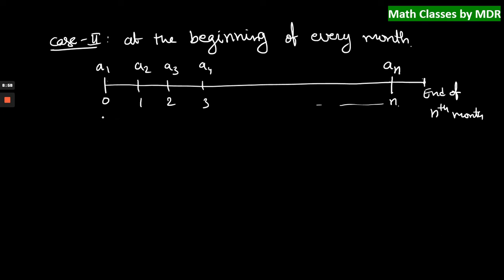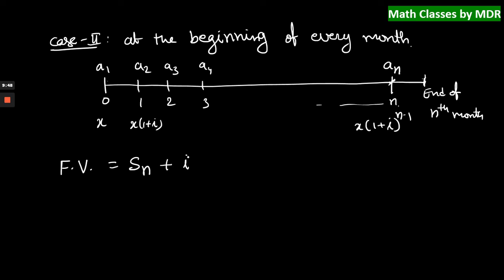The sum of this geometric series is the same as what we calculated in Case 1, which is Sn. However, An is the amount deposited at the beginning of the nth month. When we come to the end of the nth month, we get some interest on the total amount Sn. That interest is i into Sn. So the future value at the end of the nth month is Sn into (1 + i).